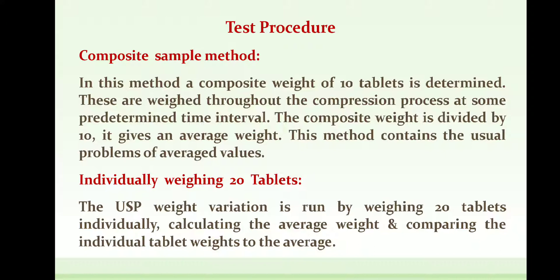The composite sample method is generally followed in industrial manufacturing processes where the tablet dosage form is already well established and continuously being produced. The composite weight is divided by 10 to give an average weight. This method contains the usual problems of average values like standard deviation and inconsistency. Based on that average, whether the tablet batch passes the weight variation test or not is determined.